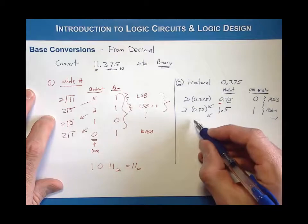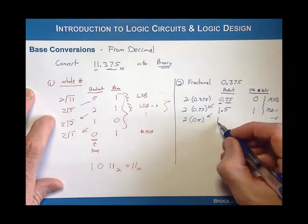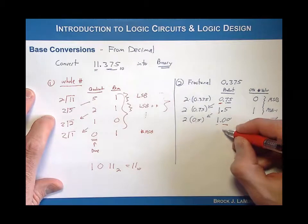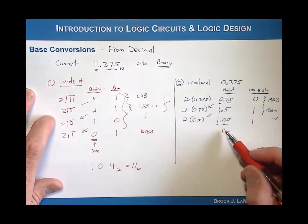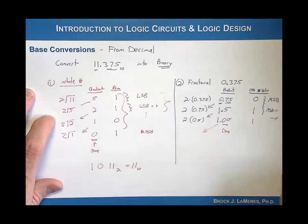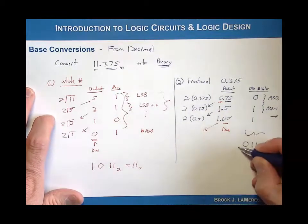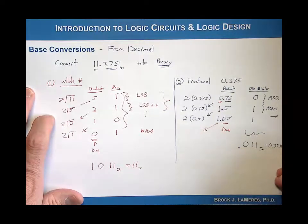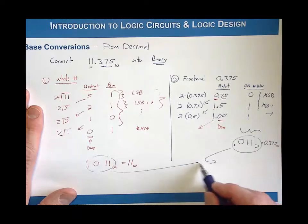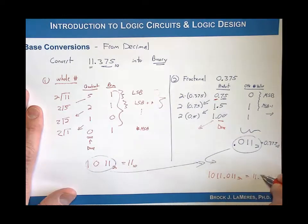This is where a lot of people get tripped up. I bring down just the fractional component: 0.5. I multiply that by 2 and I'm left with 1.00. I've now reached a point where I know I'm done because the fractional component is 0. If I brought that down I would just start recording trailing zeros, which we don't need. So I write this as .011 base 2, which equals 0.375 base 10. Combining the whole number and fractional parts, the full binary number is 1011.011 base 2, equal to 11.375.